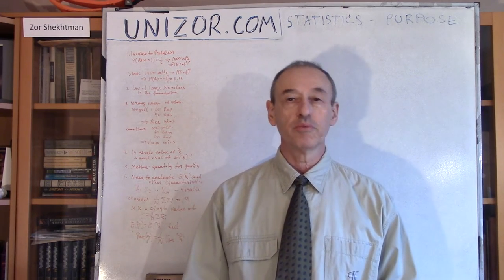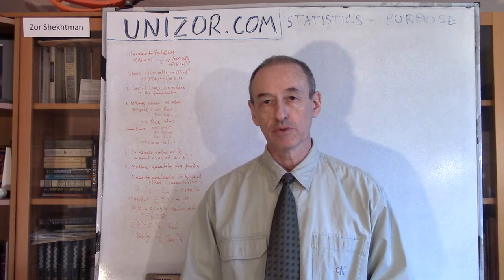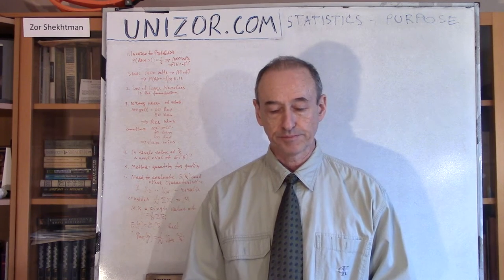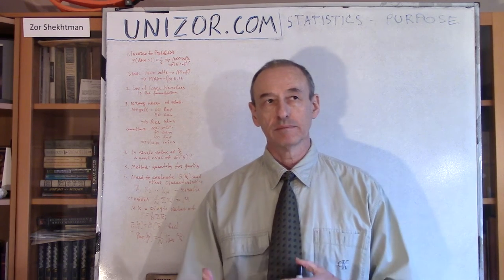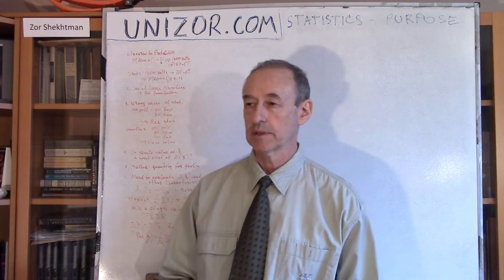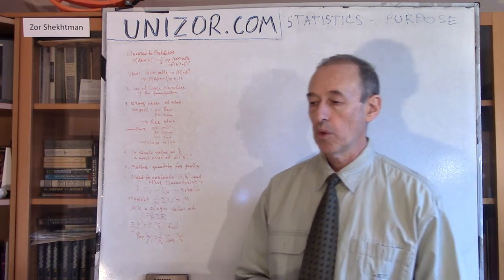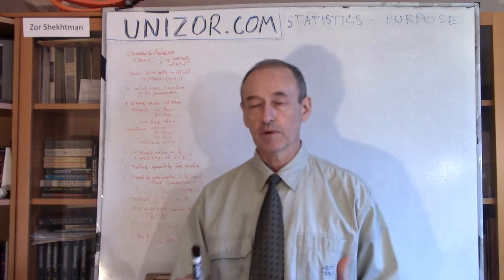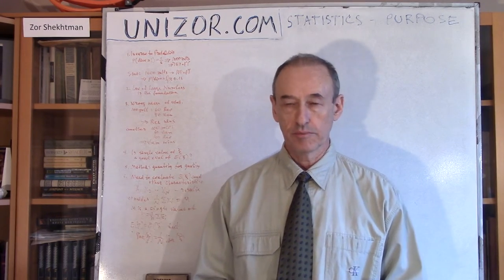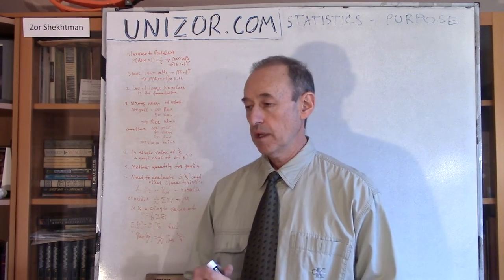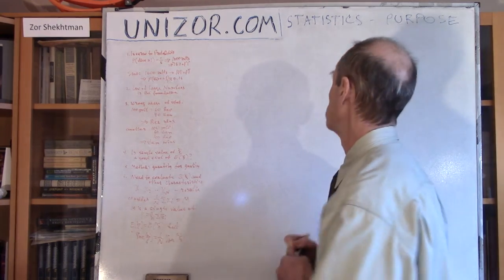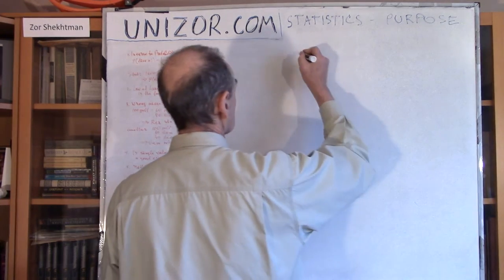There is a very important connection between these two subjects. In some way they are inverse to each other. What does theory of probabilities actually try to accomplish? Well, it deals with certain random variables. For instance, we have a random variable xi.